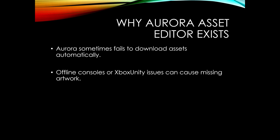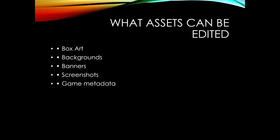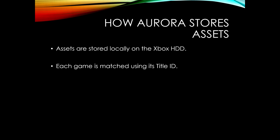With Aurora Asset Editor you can edit box art, background image, banner, screenshot, and some metadata, so that your game looks the way it should — as if Aurora itself had added it. When this information is downloaded to your console, it is saved onto your Xbox internal hard drive, saved by the game title ID for each game.